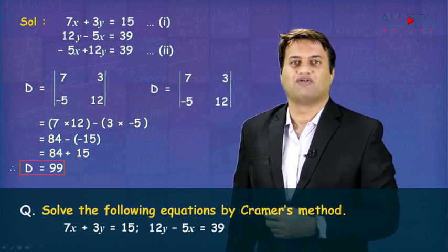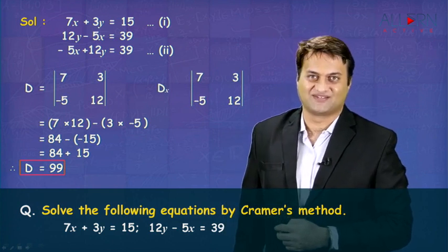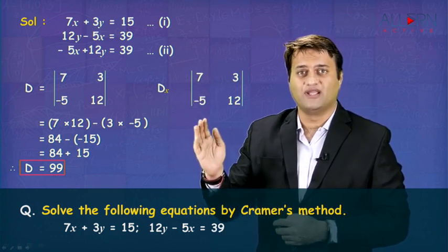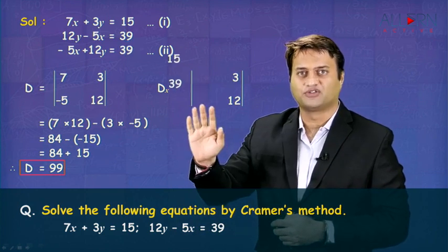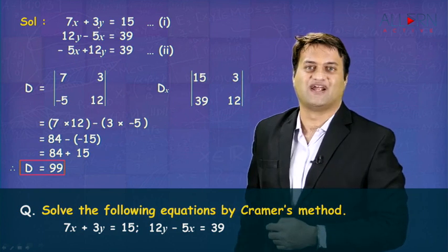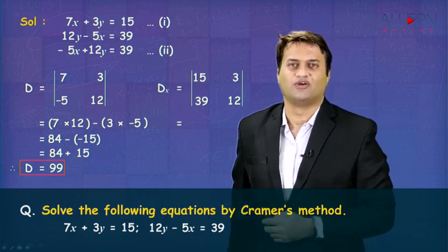Once we get the value of D, now it is time for us to find the value of DX. To find DX, you need to delete the coefficients of x from D. So you need to delete the first column and replace it by constants, that is 15 and 39. Now, let us find the value of DX.